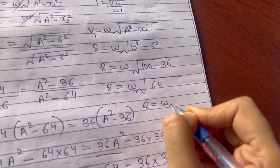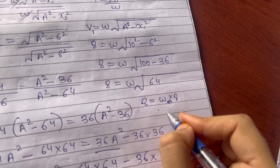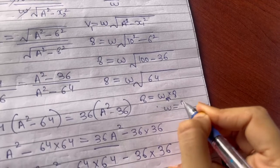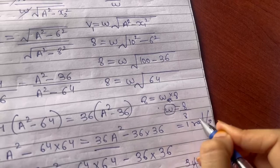So 8 is equal to omega square root of 64 is 8. Take this 8 in the denominator, so omega is equal to 8 upon 8, which is equal to 1 radian per second. Now I have the value of omega.